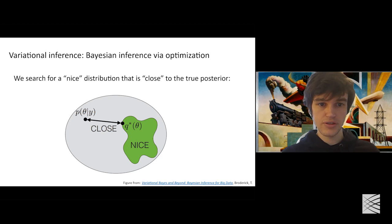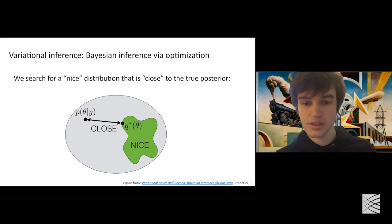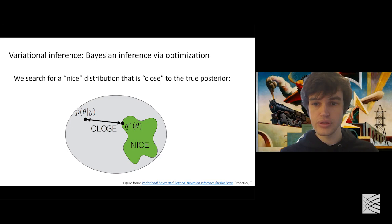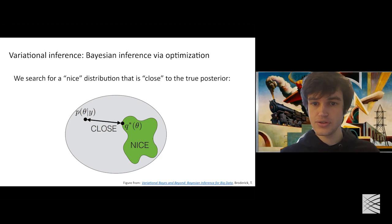In variational inference, we search through the nasty space of all probability distributions — represented by the gray circle, which includes things that are extremely complicated computationally — and look for a nice green region of distributions that are simple to represent and sample from. Within that region, we look for a distribution that is as close as possible, in some sense, to the true posterior distribution.